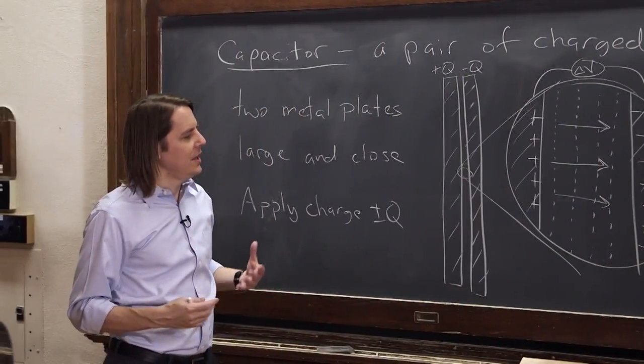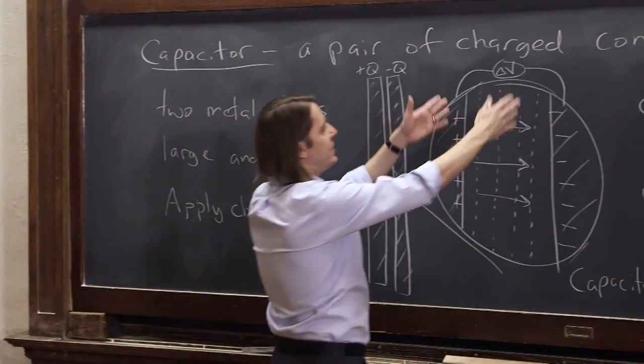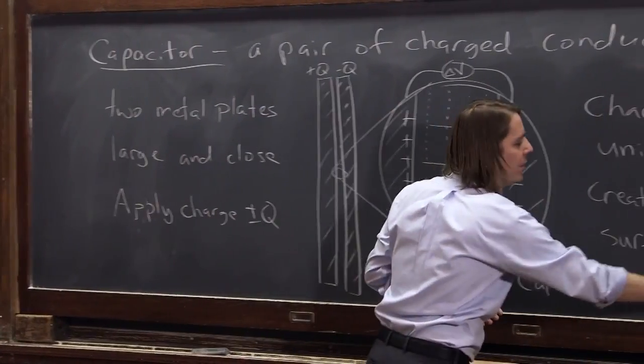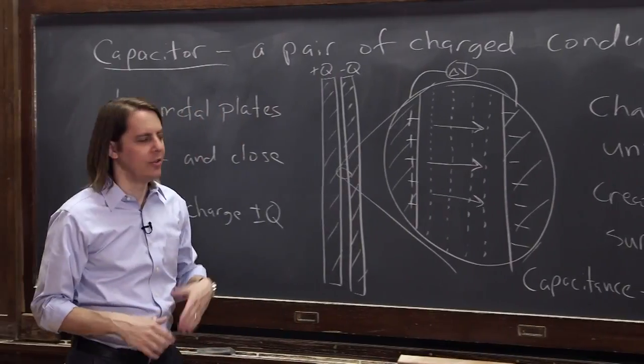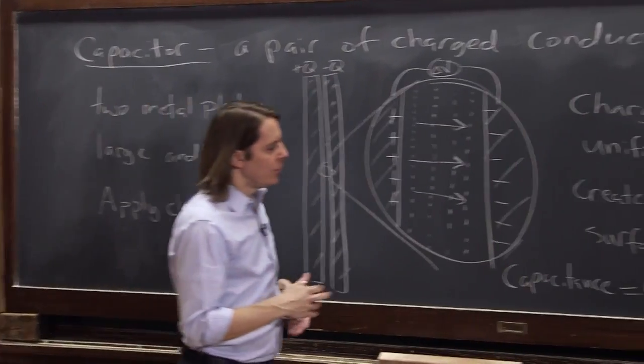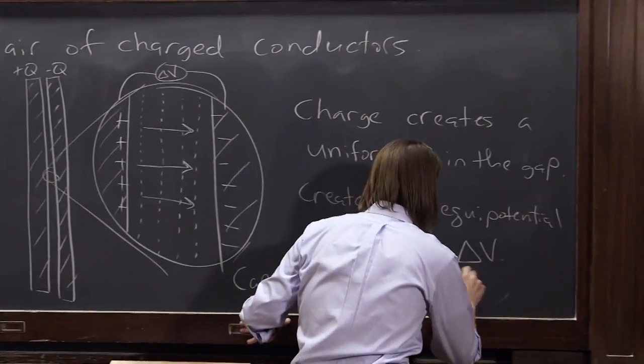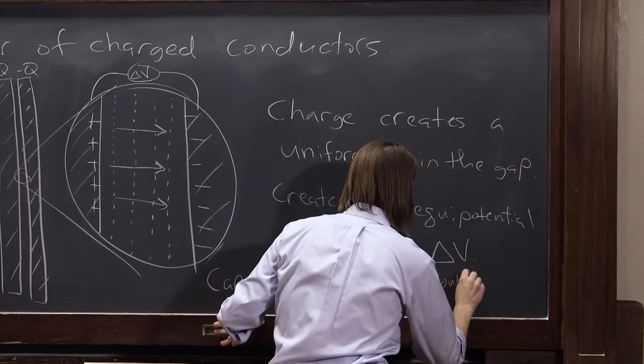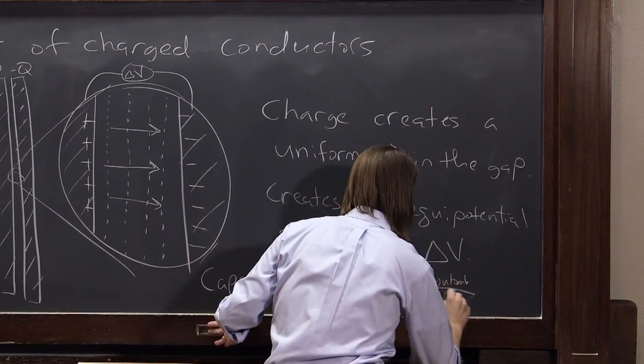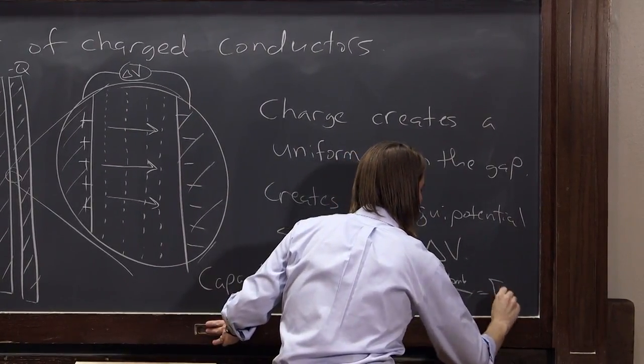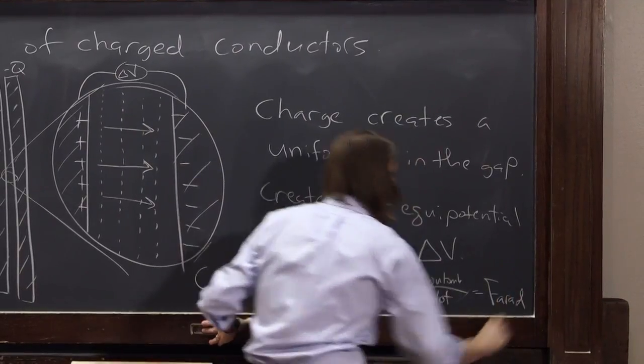So in that sense, it's how much voltage builds up when you put on a certain amount of charge. It's just the ratio. It's the charge per volt. So the unit of capacitance is the Coulomb per volt, which has a special name after the world's greatest scientist, a farad.